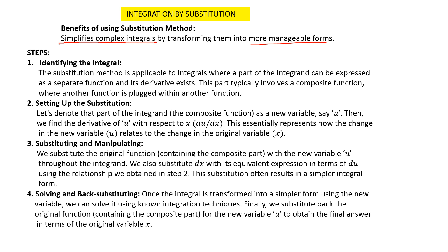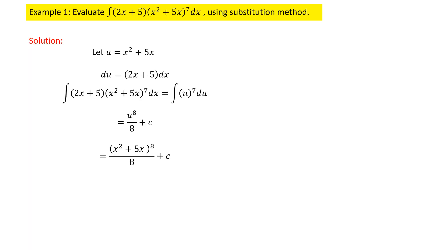Let us go to the problems straight away. In problem number one, we need to evaluate the integral of (2x + 5)(x² + 5x)⁷ dx using the substitution method. As you can see, we have two brackets — one is a linear factor and one has a power — so we take whatever is inside the second bracket as our u.